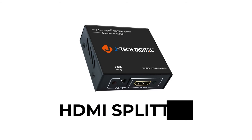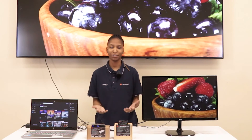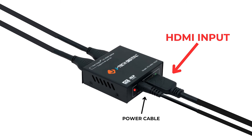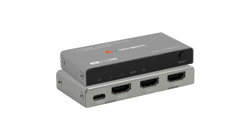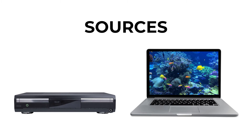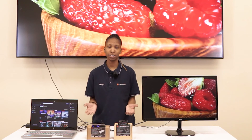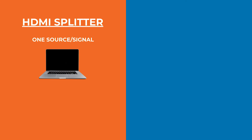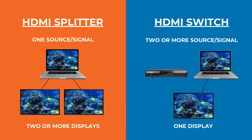Now that we've covered what a splitter and a switch are, let's go over the differences. With a splitter, we have one input and two outputs — one source to two or more displays. With a switch, we have two or more sources to one display. The splitter duplicates one signal to multiple displays, while the switch lets you switch between multiple sources to a single display.